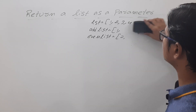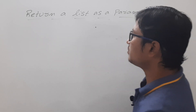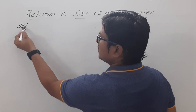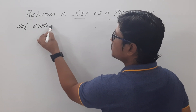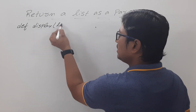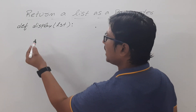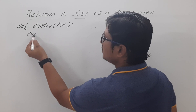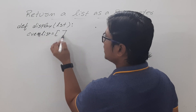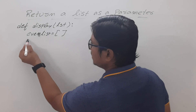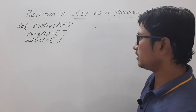Now let me write the entire program. First I will define the function using the keyword DEF, and I will write the function name as display. It will take one parameter LST, which is a list. Then I will take two lists: one is even list, which I will make an empty list right now because there are no elements. Similarly I will define odd list, also empty. These are the two empty lists right now.